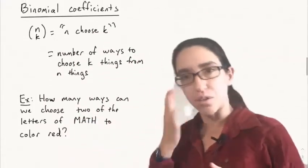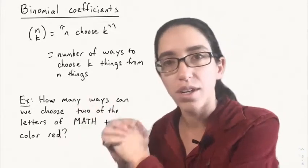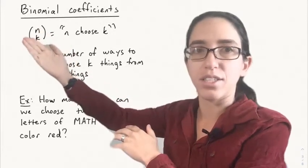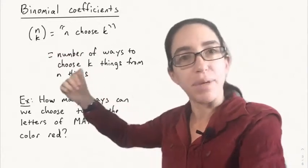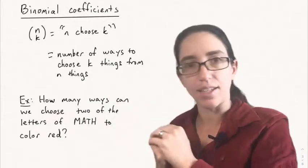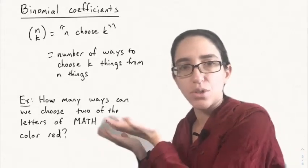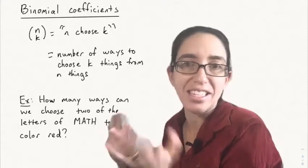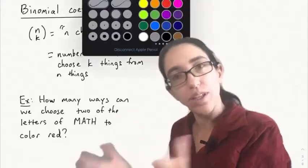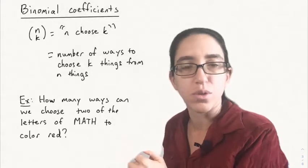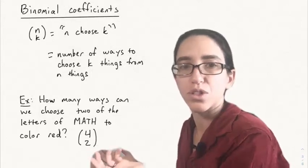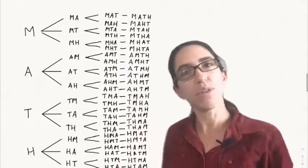This leads us to one of the most important formulas in mathematics. We'll see binomial coefficients a lot more later in this course. As a quick introduction, we write the symbol N above K in parentheses to mean "N choose K." It's defined to be the number of ways to choose K things from N things, not necessarily in order — just pick K things out of N things. For instance, how many ways can we choose two of the letters of math to color red? Now it doesn't matter the order in which we chose them, so it's a slightly different problem than before. This is four choose two, because we're choosing two of the letters out of four.